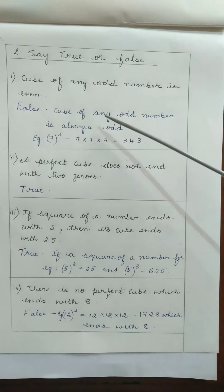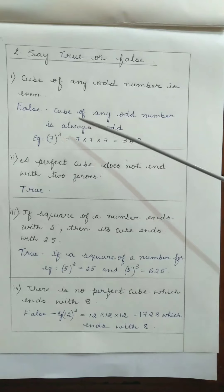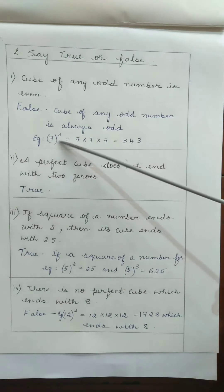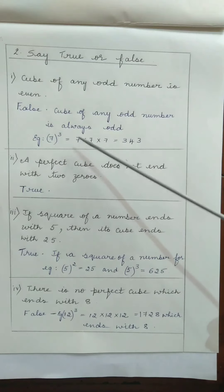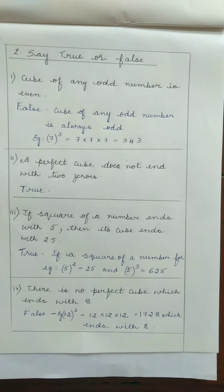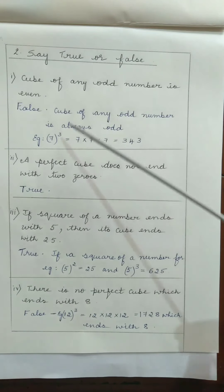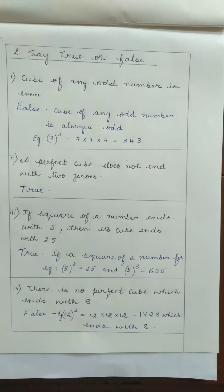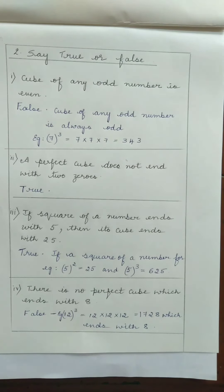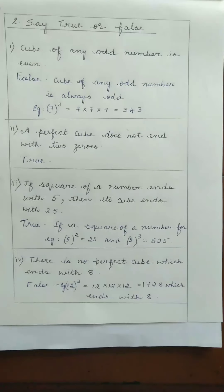The correct statement is: cube of any odd number is always odd. So I have given one example — 7 cube equals 7 into 7 into 7, which is 343, and it is not even. So 'cube of any odd number is even' is the false statement. The correct statement is: the cube of any odd number will always be an odd number.